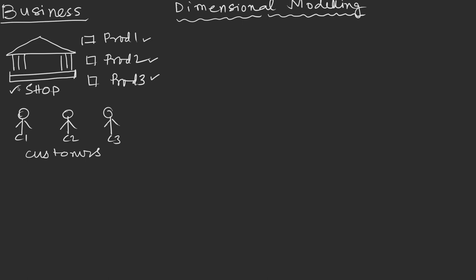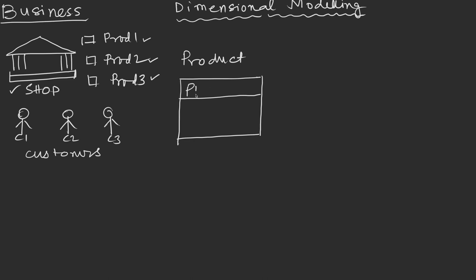Once we know our dimensions and measures, we put the dimensions into dimension tables. We can create a product dimension table right away. This table will have a product key to uniquely identify each product in the dimensional model, along with other product-related attributes such as product name and product price.